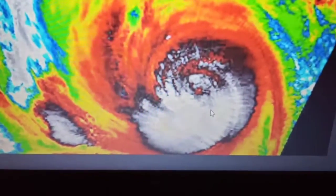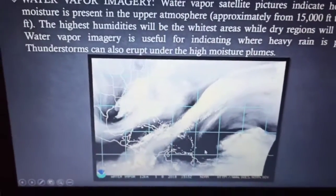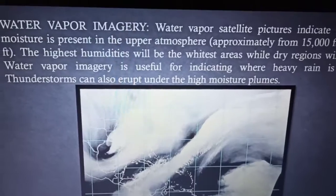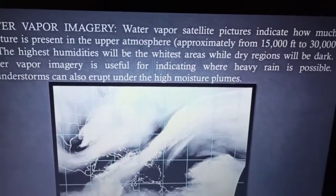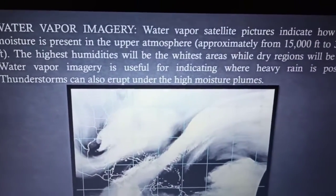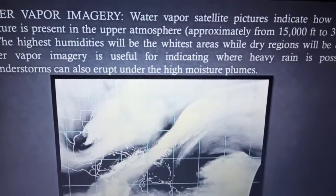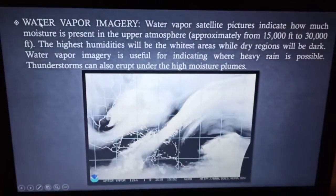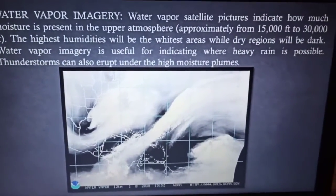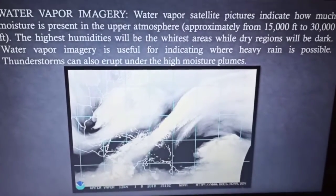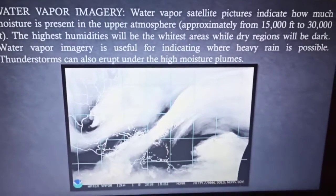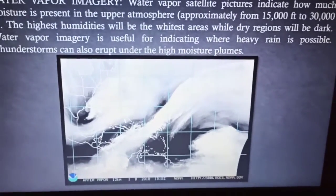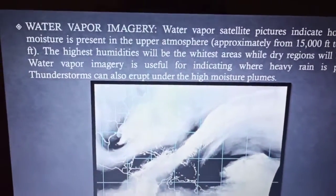You can see in this infrared image that the central portion is excessively cloudy with a spiral pattern visible, helping us understand the intensity of the thunderstorm. If clouds are forming at a larger intensity, we can understand that with the help of infrared imagery. The last type is water vapor imagery. Water vapor satellite pictures indicate how much moisture is present in the upper atmosphere, approximately from 15,000 feet to 30,000 feet.